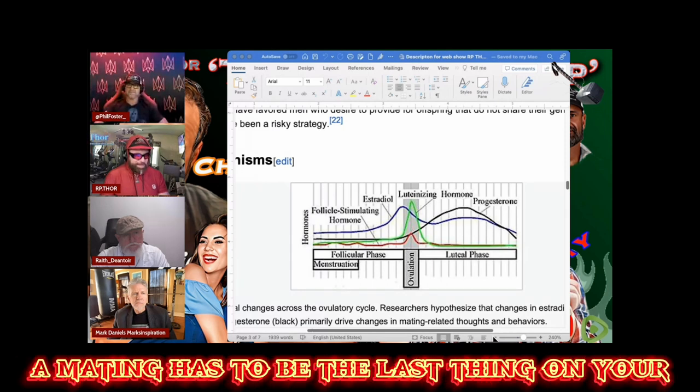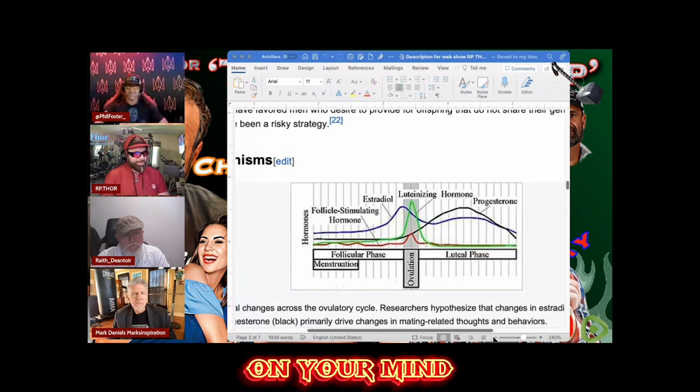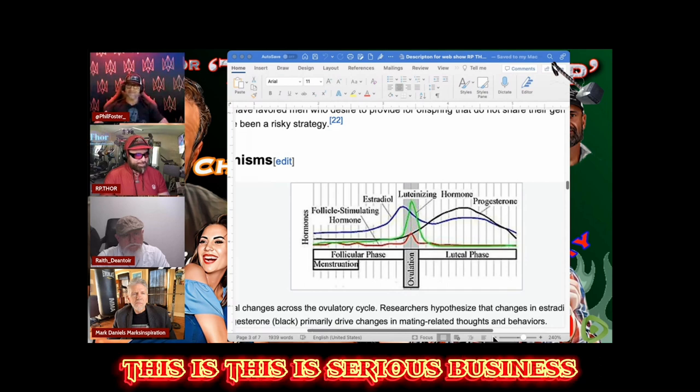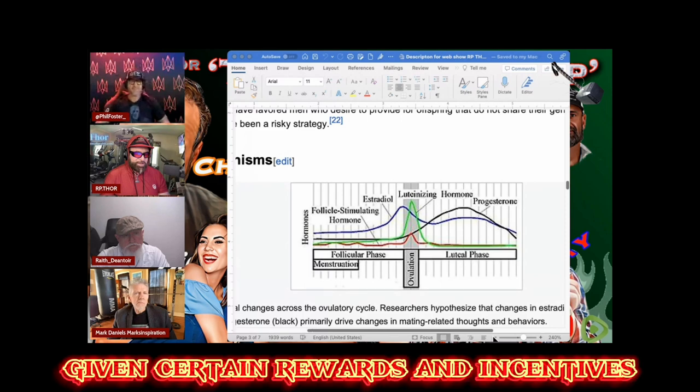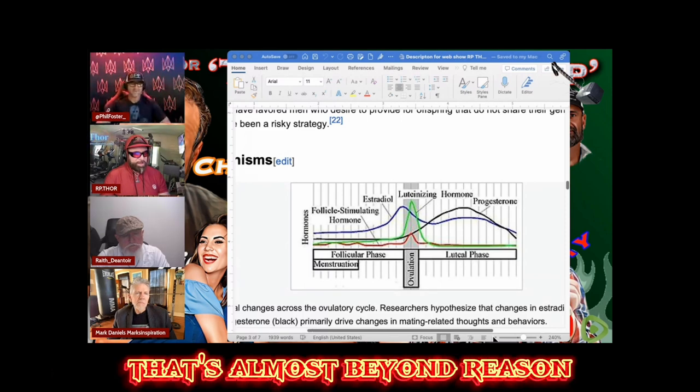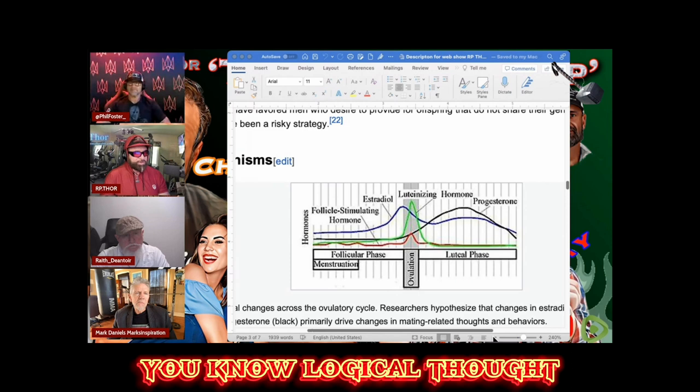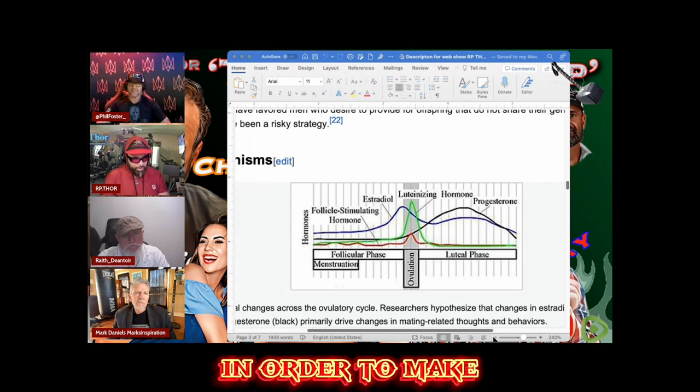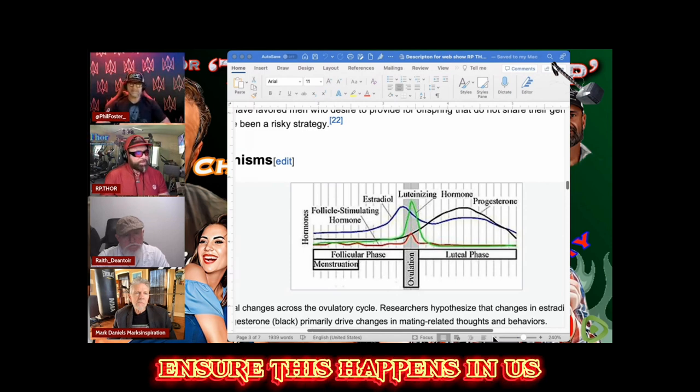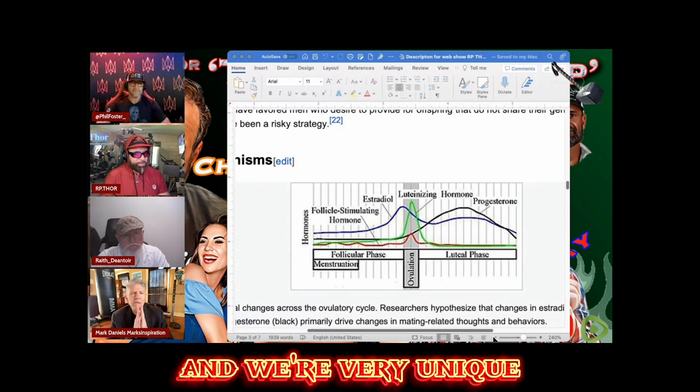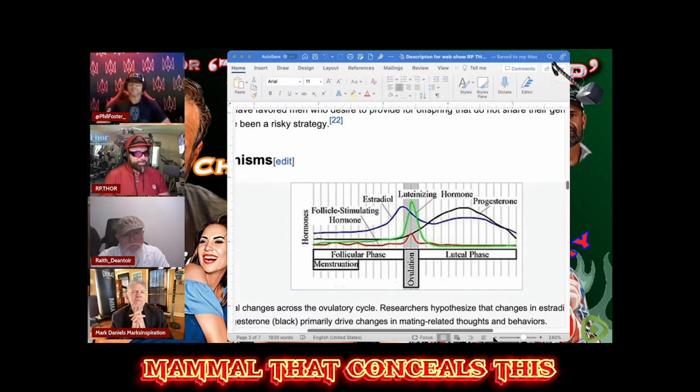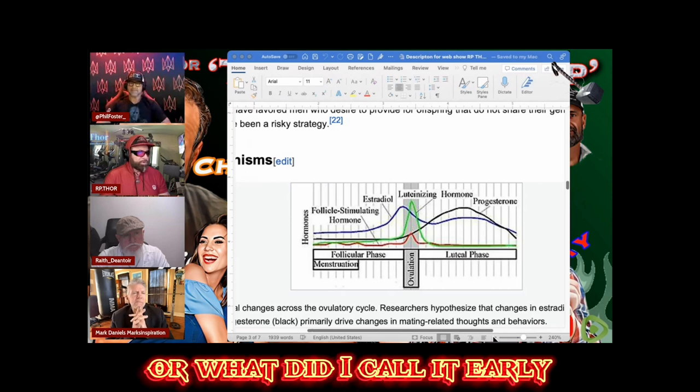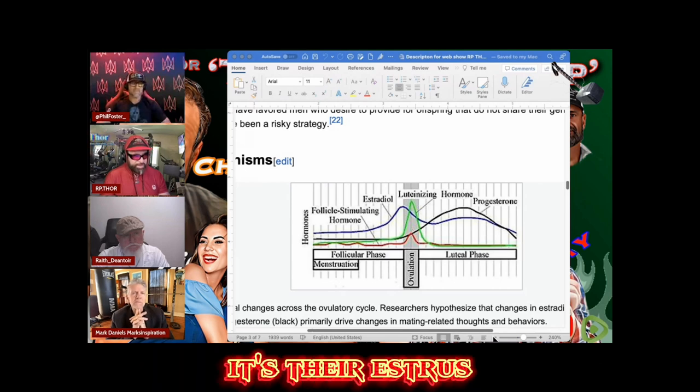If you think about that kind of risk, can you imagine living in the Stone Age, Phil, and you're a woman? You may not want kids. Mating has to be the last thing on your mind. This is serious, dangerous business. So nature has given certain rewards and incentives that drive this that's almost beyond reason or logical thought to ensure this happens in us.